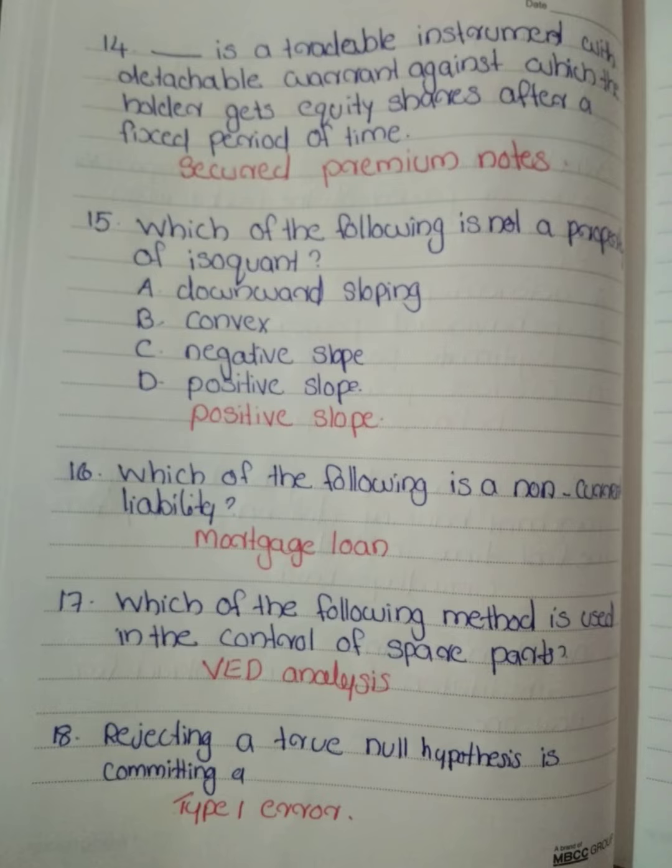Which of the following is a non-current liability? Answer: Mortgage loan is a non-current liability.